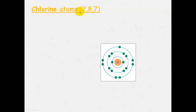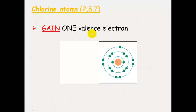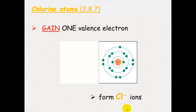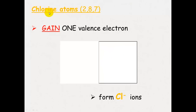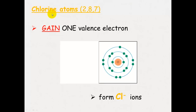Chlorine atoms are non-metals and have a 2, 8, 7 electron configuration, so they want to gain one valence electron. The electron comes in and now chlorine has a full outer shell with an extra negative charge. This means it has formed a chloride ion. Remember, with non-metals, when it becomes an ion, you change the ending to '-ide'. So it becomes a chloride ion.